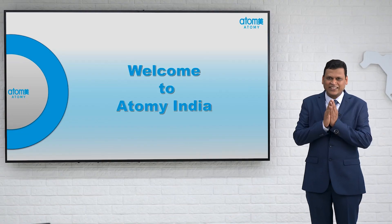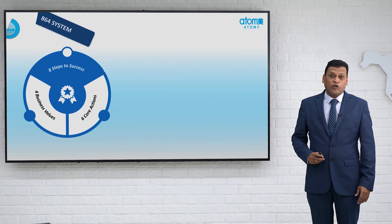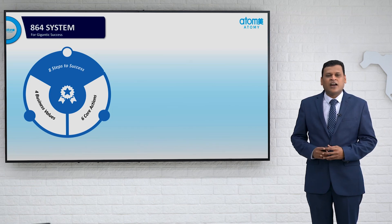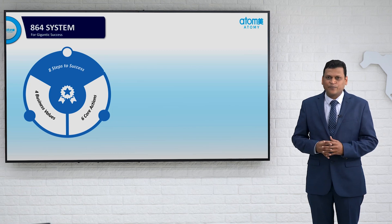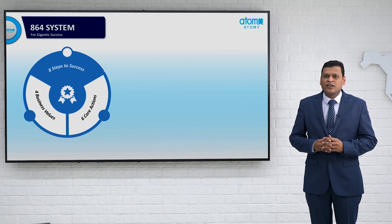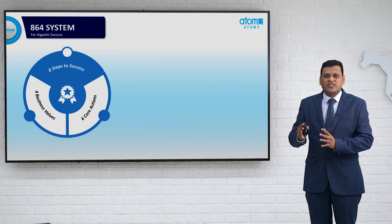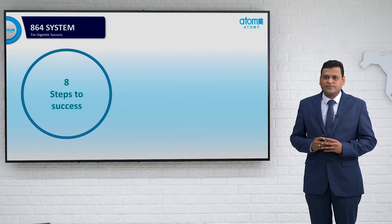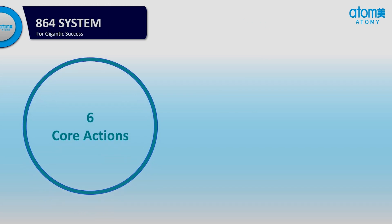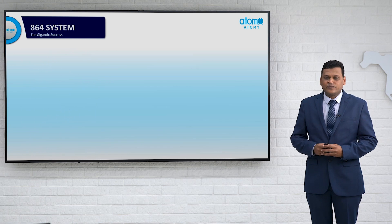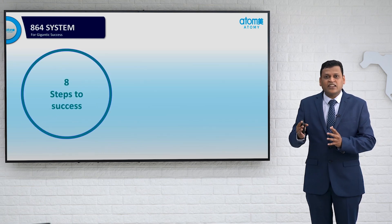Hello everyone, namaste. Let us see now about the 864 system. System processes, formats, and SOPs are very important to develop our own business and these are proven tools for getting successful. In the 864 system, 8 means 8 steps to success, 6 means 6 core actions, and 4 means 4 business values.